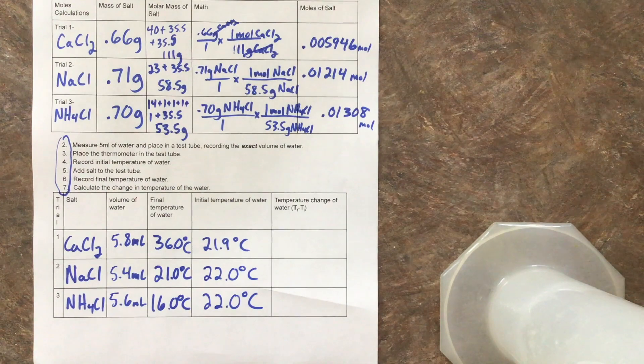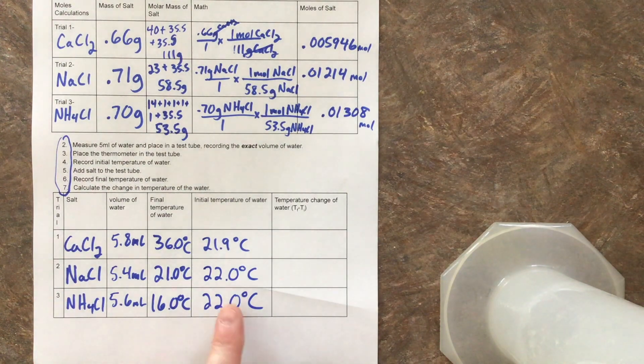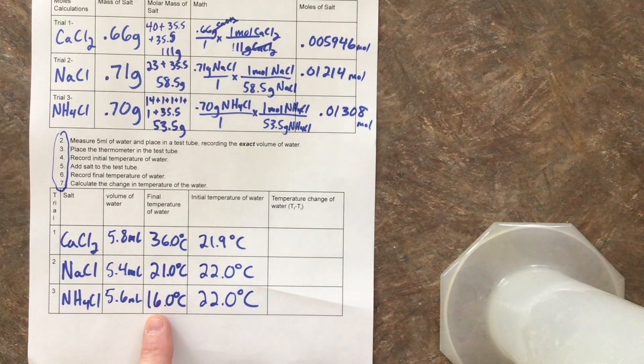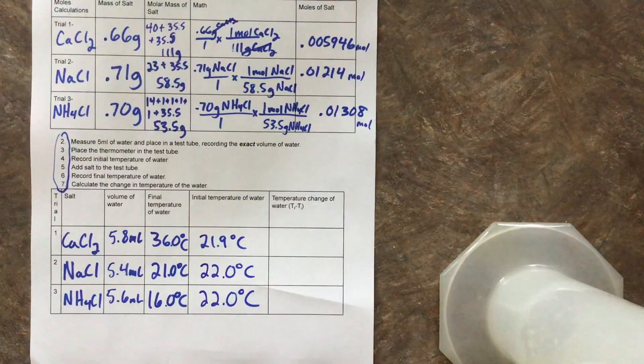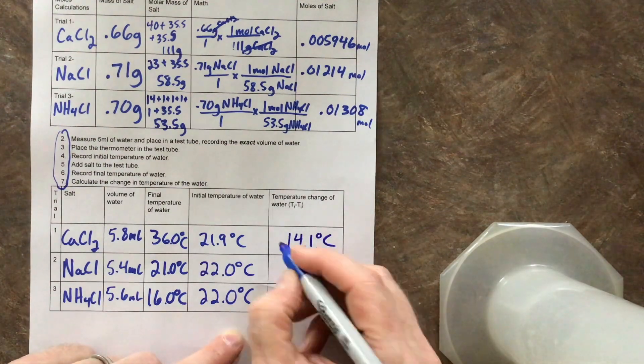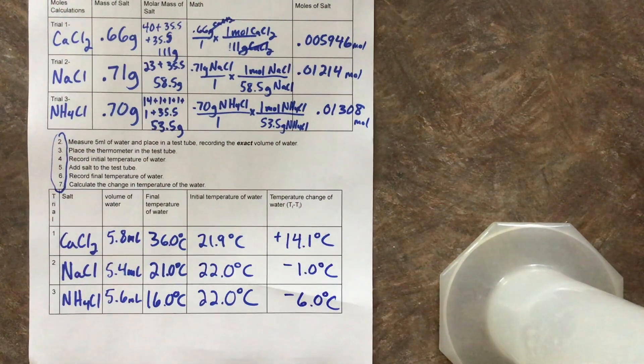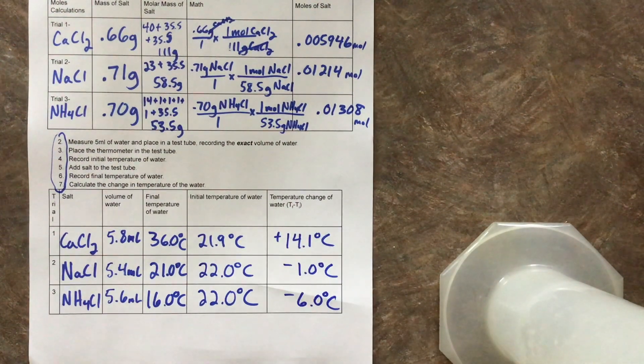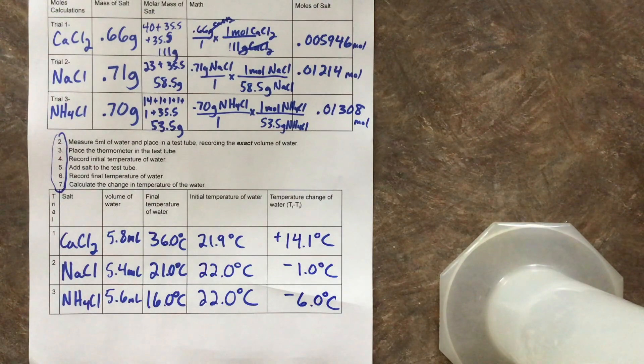So here's what we have for our data. We can see our temperatures are set up there. Our initial temperatures here. We have our final temperatures here. They all behave differently. So let's go ahead and subtract those numbers and find out what our temperature changes are. And you'll note, I did put positives and negatives. You do want to keep track. Was the temperature going up or was the temperature going down?